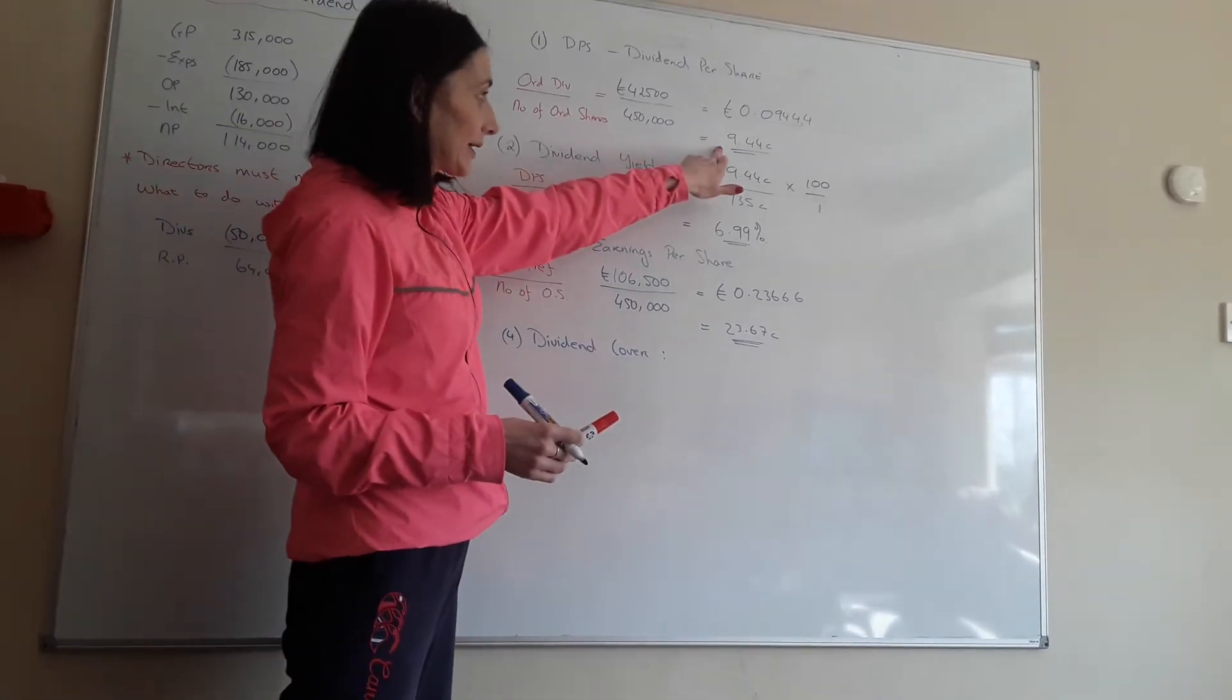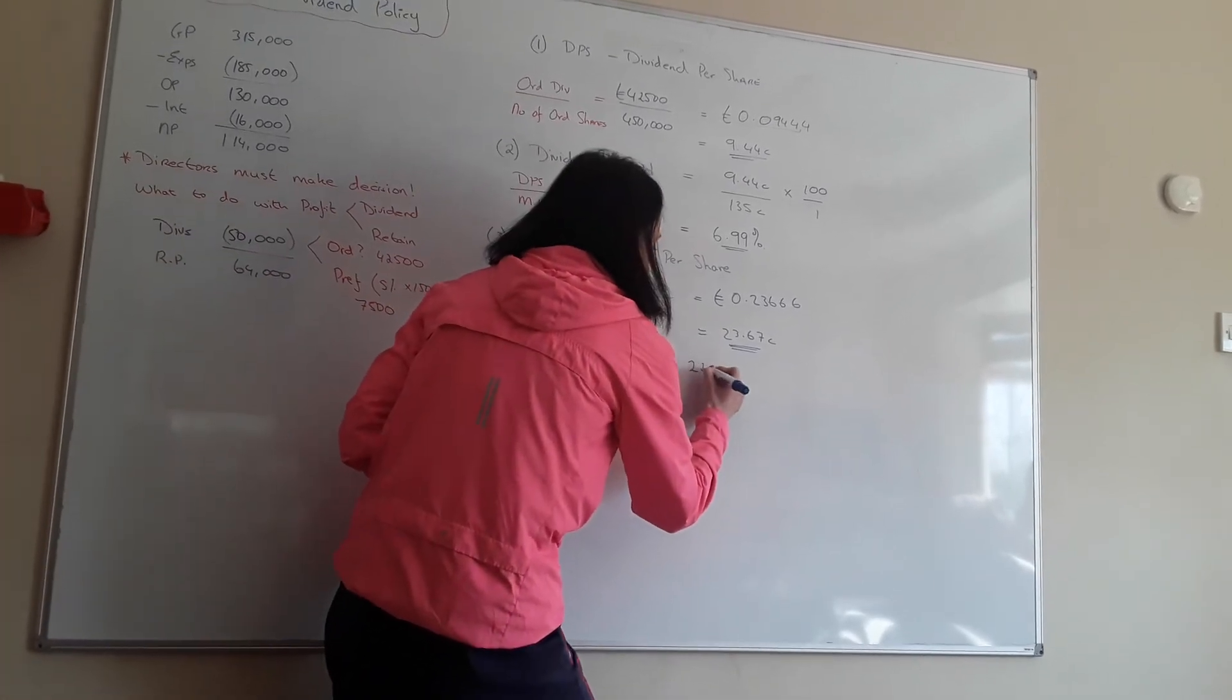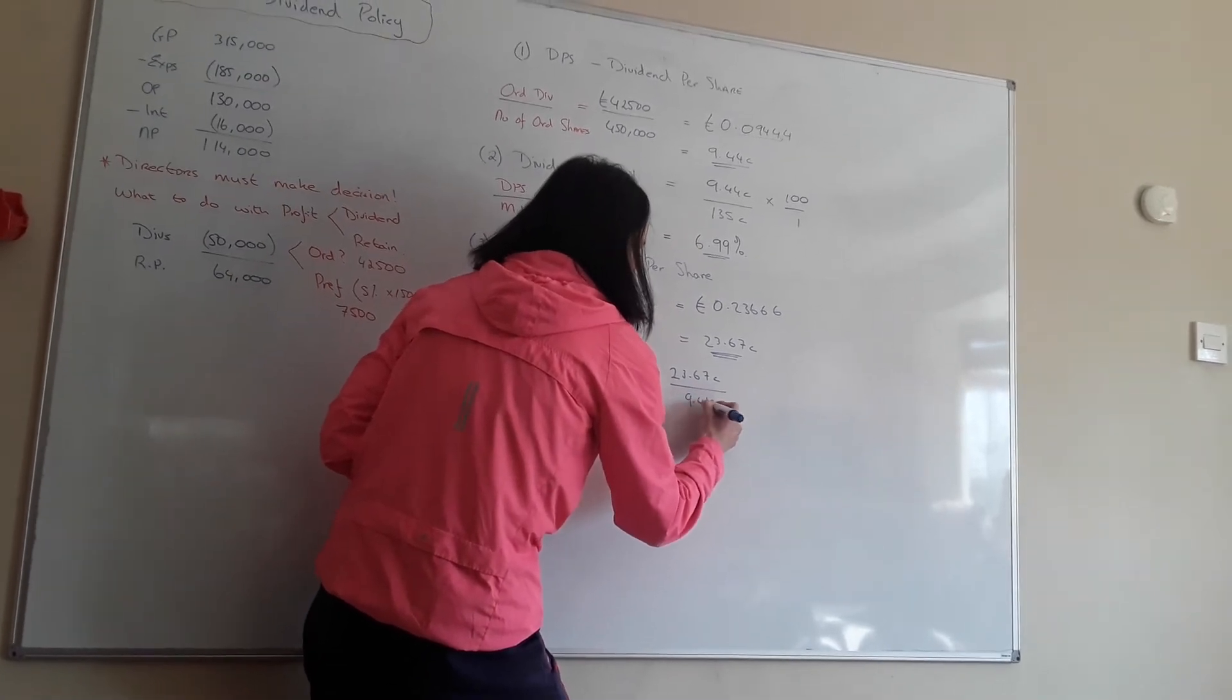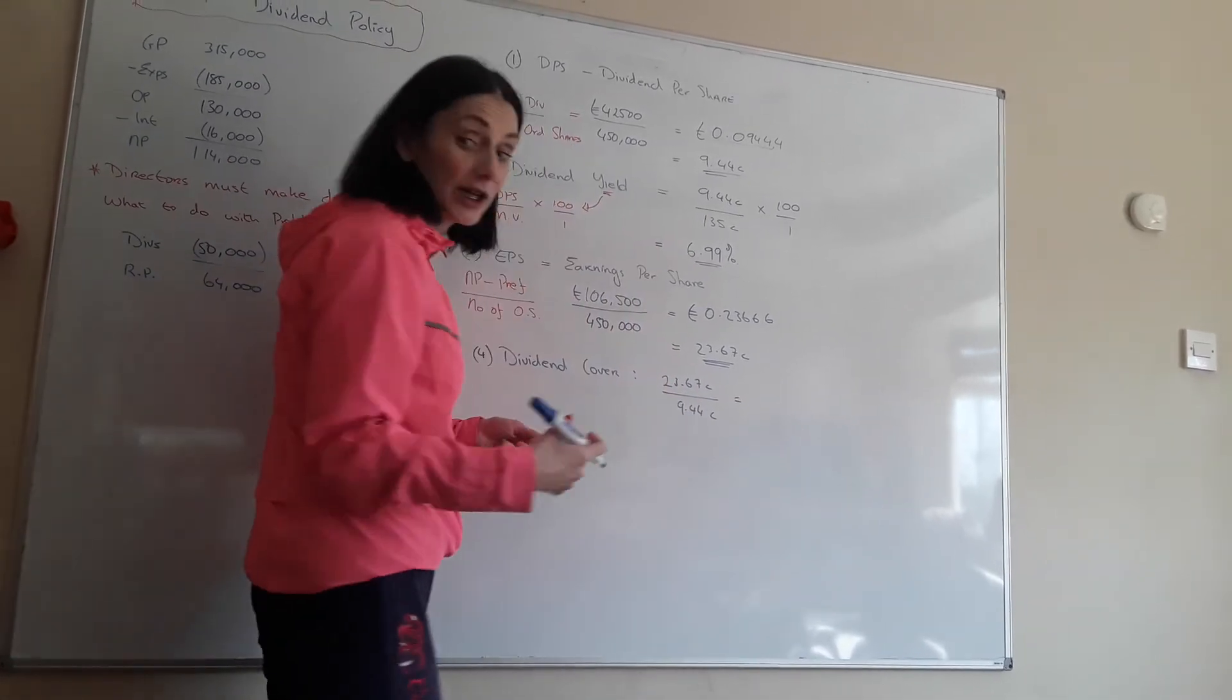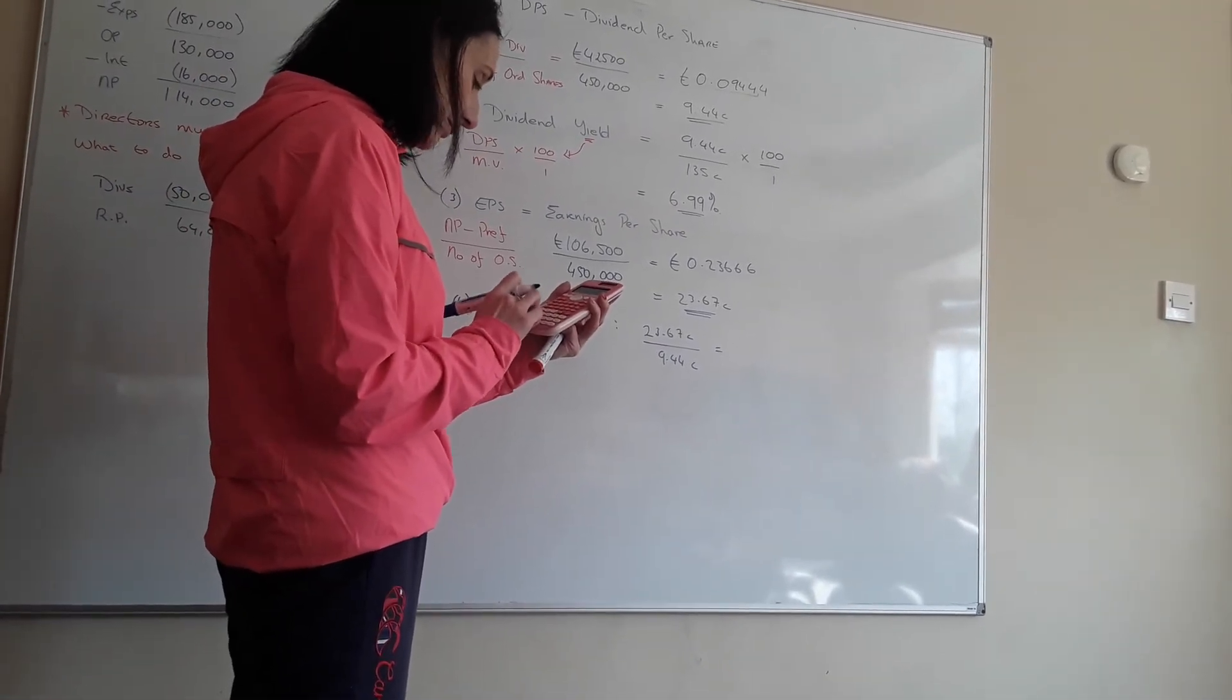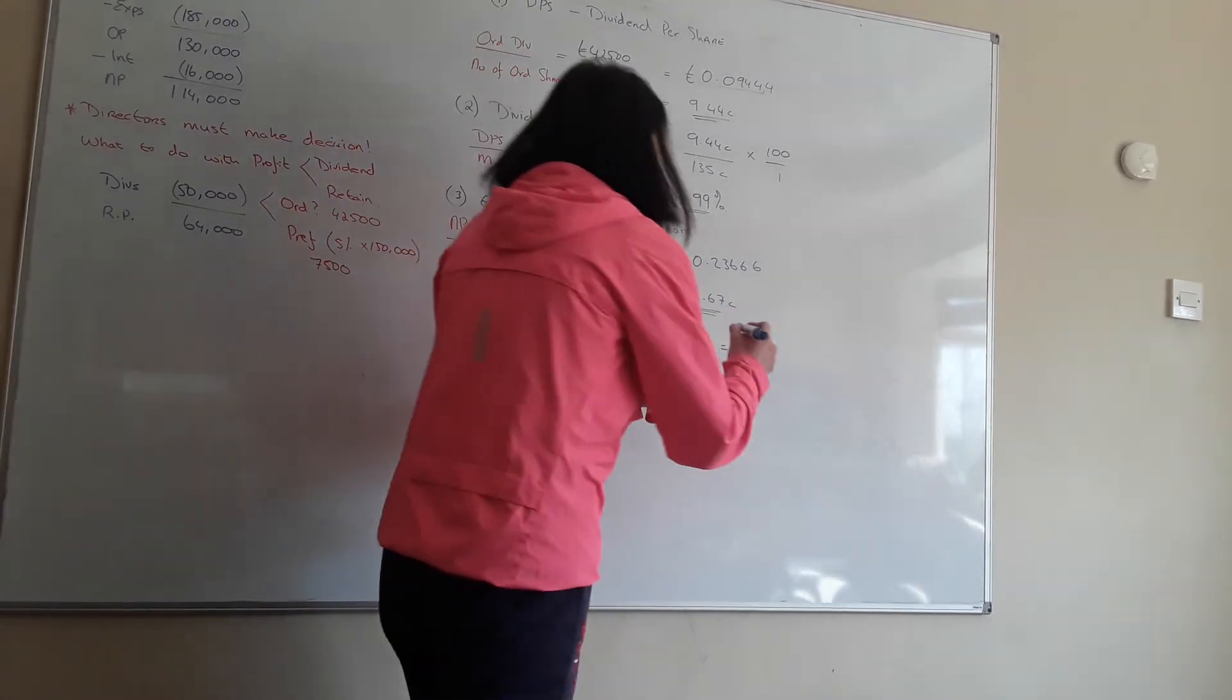This is what you paid. This is what you could have paid. So how many times could you have paid them. So it's 23.67 cent divided by 9.44 cent. It tells me how many times I could have actually paid my shareholders. 23.67 divided by 9.44. Again, watch your decimal places. It says it's two.